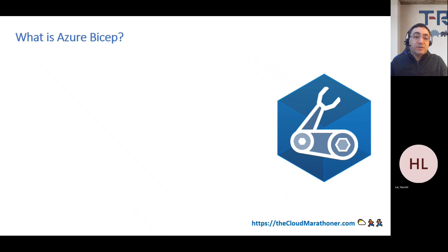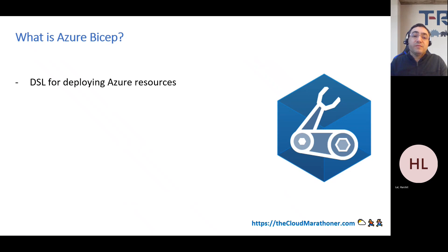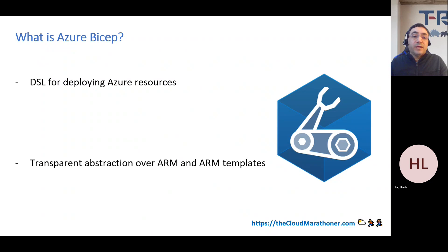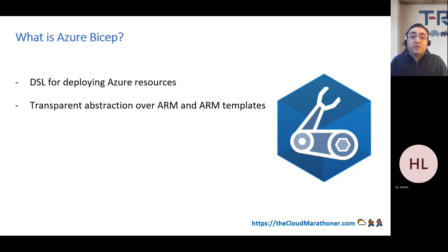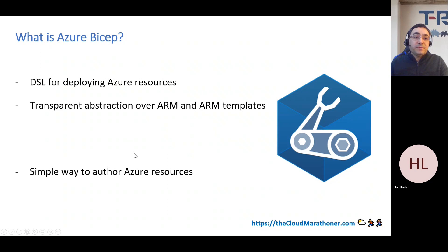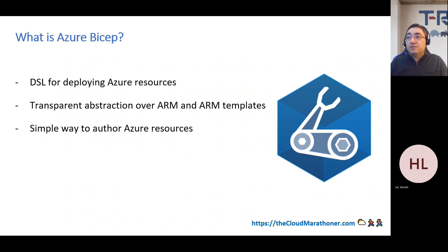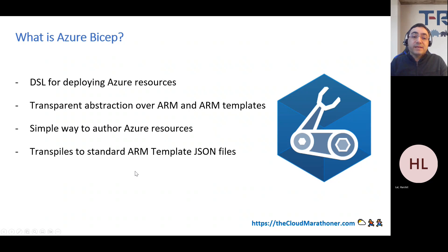So what is Azure Bicep? It's a new declarative domain-specific language - DSL - for provisioning Azure resources. The purpose of Azure Bicep is to simplify the resource creation and management experience with a cleaner syntax and more code reuse. This new language aims to make it easier to write infrastructure as code for developers and DevOps engineers that typically create ARM templates targeting the Azure Resource Manager APIs.